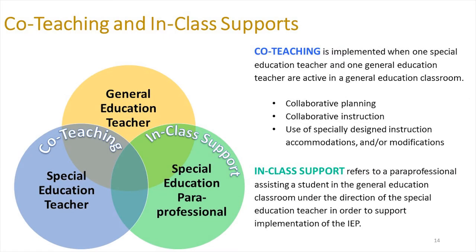Students with IEPs who are supported in general education may have adults who support specific needs. When a second adult is needed in the classroom, the IEP will designate that a special education teacher will be present for the class using the term co-teach. This term means that the two teachers are active in the classroom and participate in collaborative planning, instruction, and the use of specially designed techniques, accommodations, or modifications. The IEP identifies the time commitment that the special education teacher will make to supporting the student in the classroom. If the service needed in the classroom is identified in the IEP as in-class support, a paraprofessional will assist the student under the direction of the special education teacher. When done correctly, these personnel supports can have a positive impact on instruction and student progress.